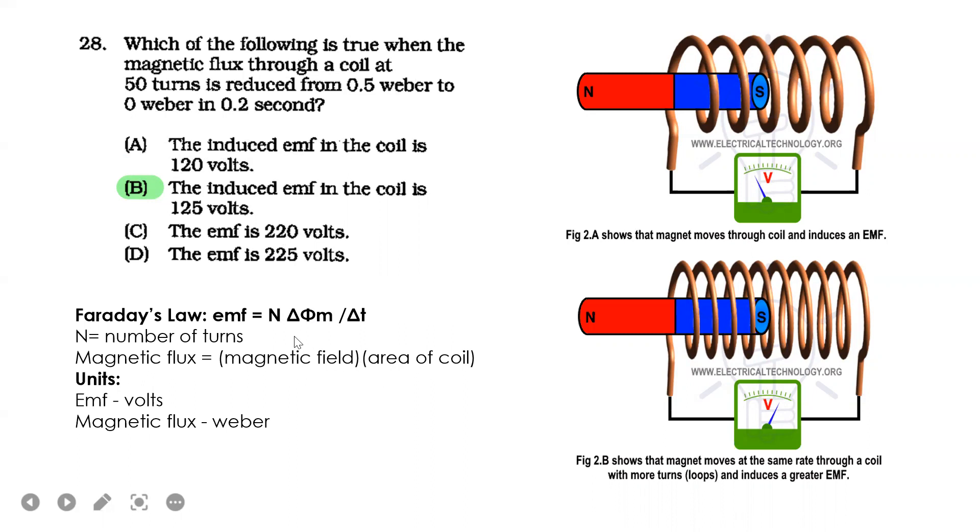You have the number of turns, and the change in magnetic flux. Magnetic flux is measured in webers. It's given: 0.5 weber to 0 weber, so that's the change. You have the change in time, 0.2 seconds. Let's solve.